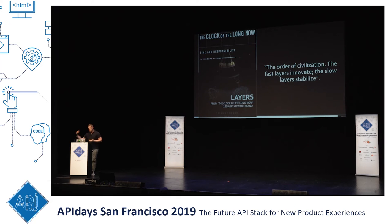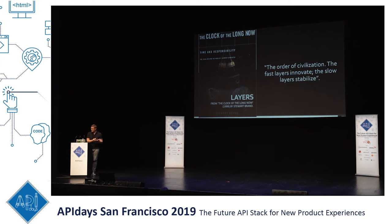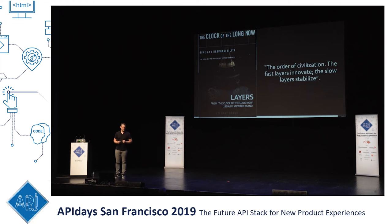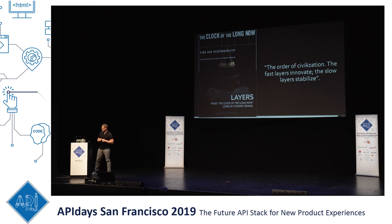The fast proposes, the slow disposes. Fast is discontinuous and slow is continuous. Fast informs the slow and big by accrued innovation and occasional revolution, and the slow and the big control the fast by constraint and constancy. Fast gets all our attention — we love fashion. It's what drives ticket sales to conferences like this, it's what sells books, it's what gets those enterprise licenses. However, it's really the slow that has all the power.